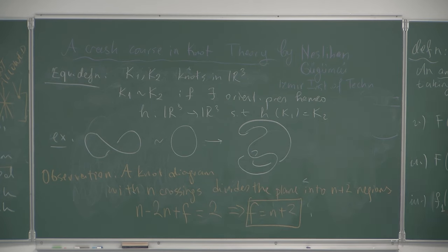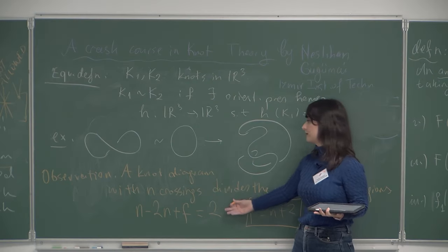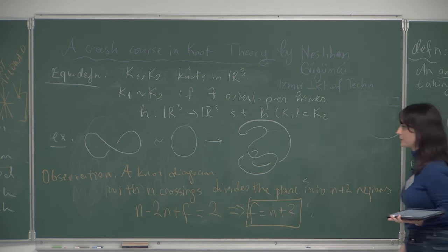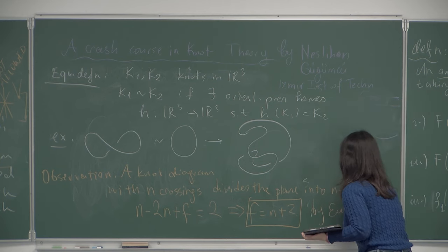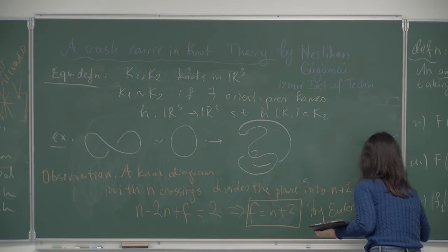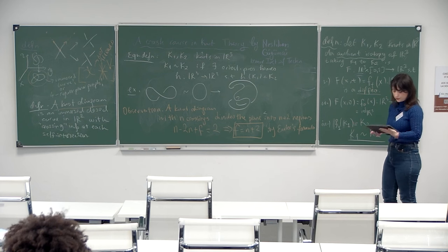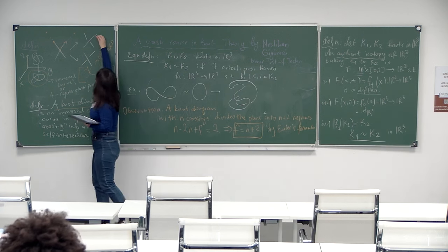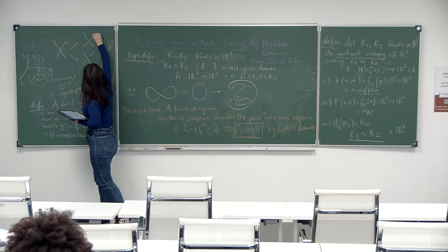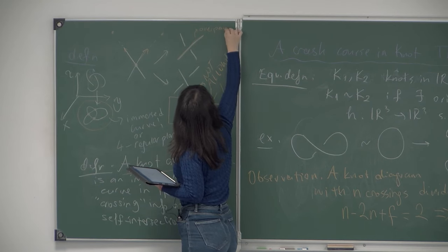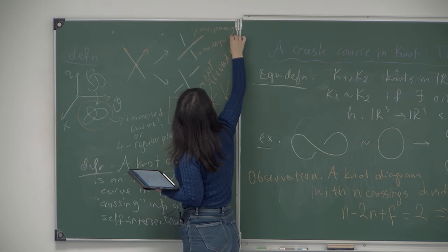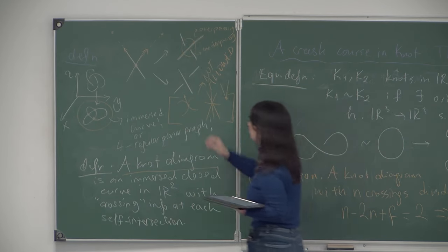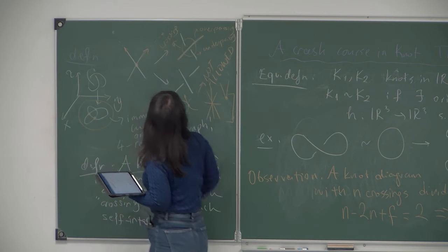This observation can be extended if a knot diagram is embedded in a higher-genus surface, using the generalization of Euler's formula. We'll also use the terminology: the overpassing strand and the underpassing strand meet at a crossing of a knot diagram. We can also assume an orientation or direction on knot diagrams - directing the strand either counterclockwise or clockwise.